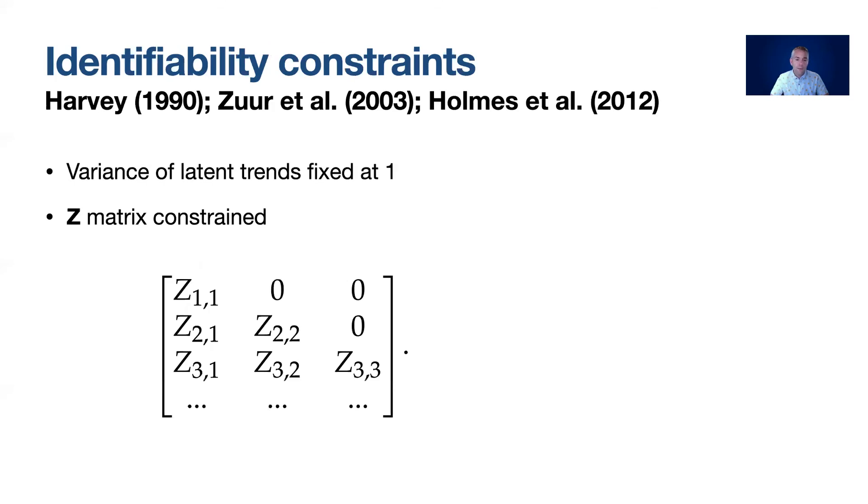In the bayesDFA package we adopt a number of constraints on some of the parameters including the Z matrix that have been previously proposed to help with identifiability. One of the common constraints is to set the upper diagonal elements of Z to zero as I've shown here.